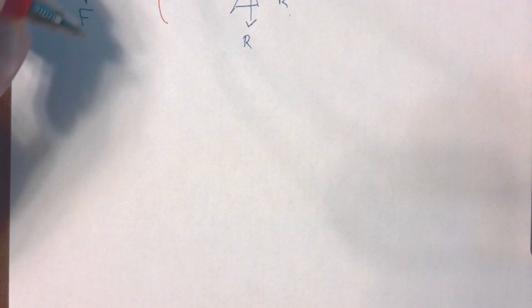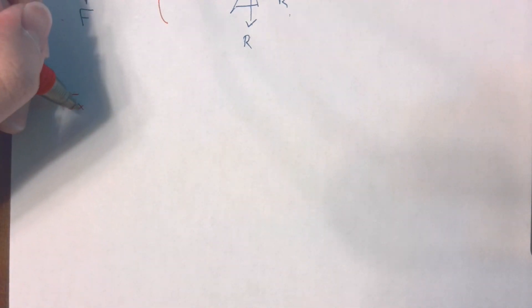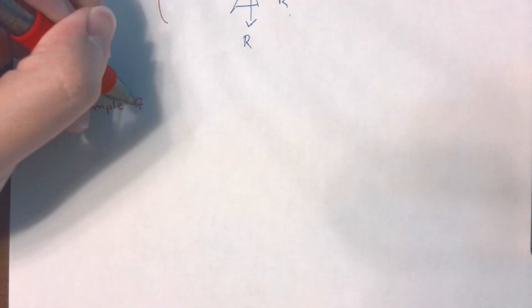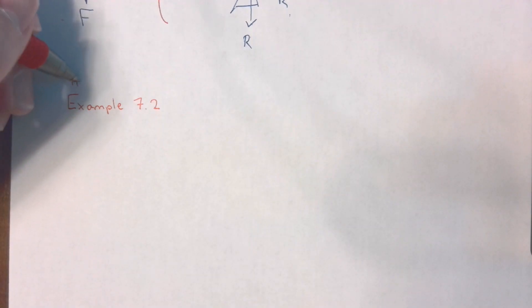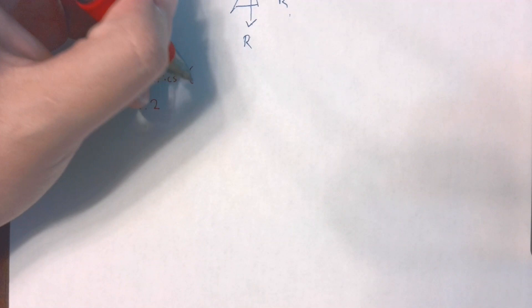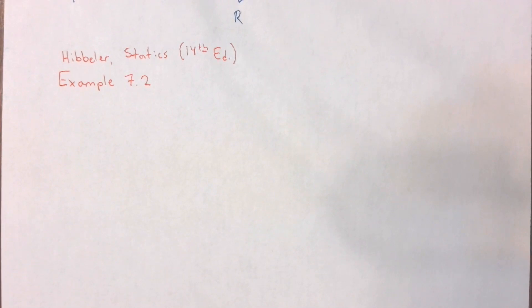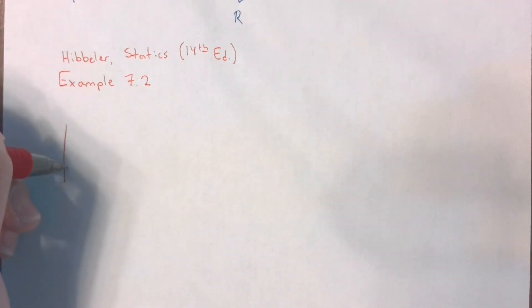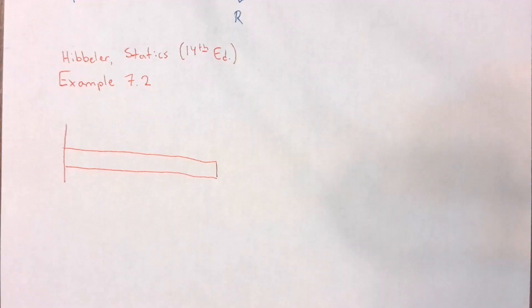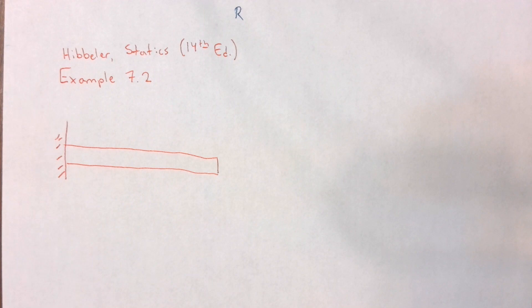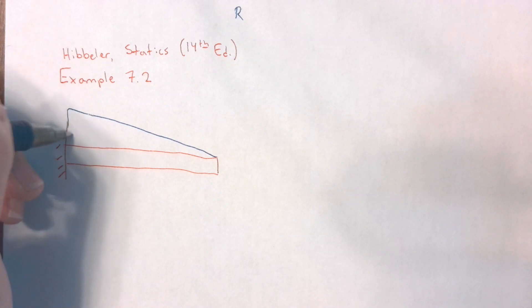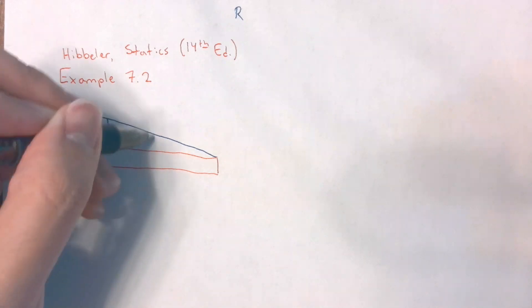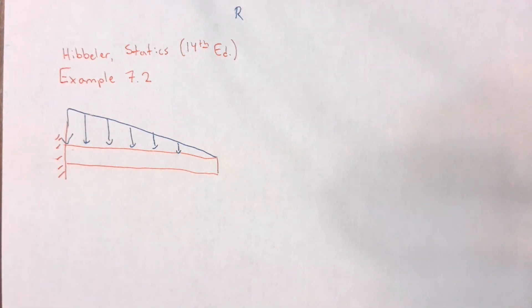All right, so let's do example 7.2 from the book. And again, this is from Hibbeler's book. Now that everything is online and I'm recording, I have to make sure that I give credit. So in this example, it's a little bit different because they give us a cantilever beam that's connected to a fixed support and has a distributed load acting on it.